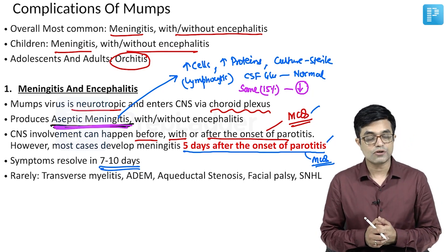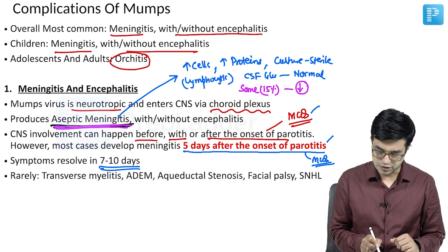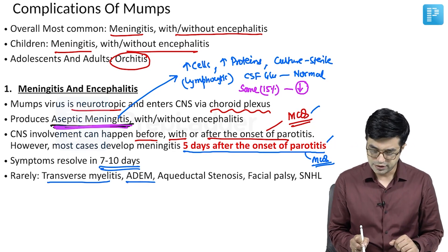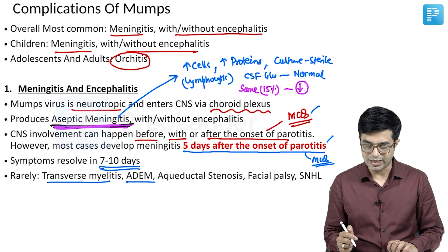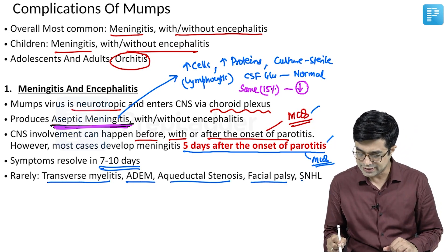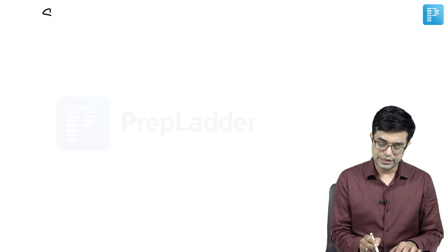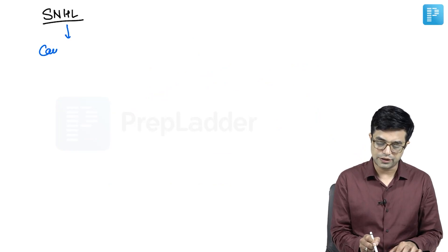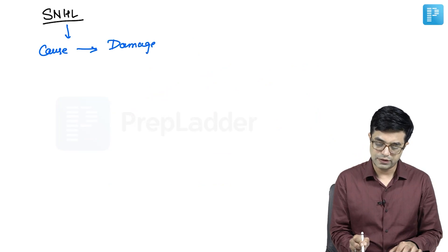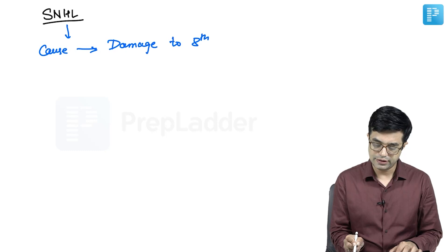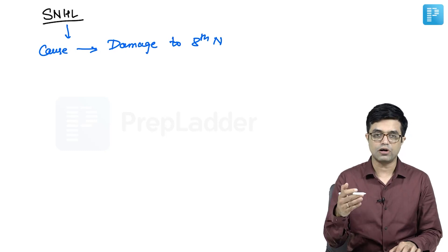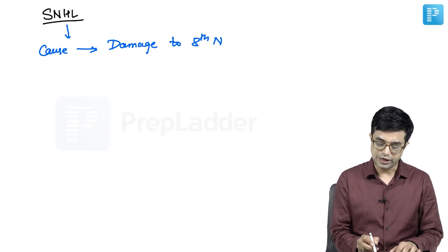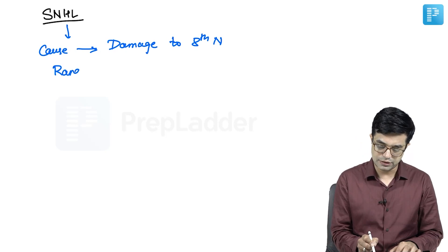Rarely, other CNS complications may occur, including transverse myelitis, ADEM (acute disseminated encephalomyelitis), aqueductal stenosis, facial palsy, and sensorineural hearing loss. Regarding sensorineural hearing loss in mumps, the cause is damage to the 8th nerve — the auditory nerve. However, it is a rare complication, and in many cases the damage is transient.